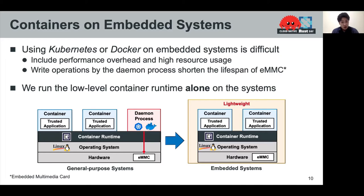How do we run container runtimes on such embedded systems? It is difficult to use Kubernetes or Docker on embedded systems because those software packages include performance overhead and high resource usage to manage containers. For example, Kubernetes and Docker include high-level runtimes that manage container images. In the case of mission-critical systems, we cannot ignore the overhead because response time should be tight for real-time applications. In addition, write operations shorten the lifespan of eMMC — embedded MultiMediaCard — which is a standard specification of embedded memory. A daemon service such as Dockerd always writes to metadata files mounted on eMMC of embedded systems. We want to avoid write operations as much as possible to extend the lifespan of the eMMC.